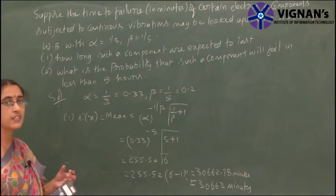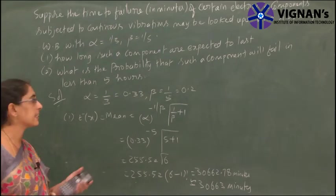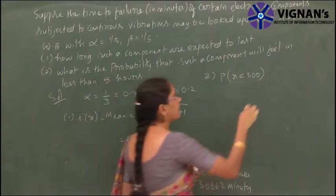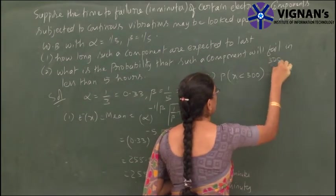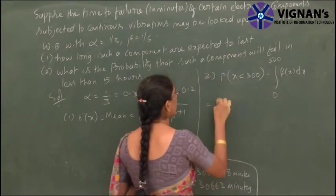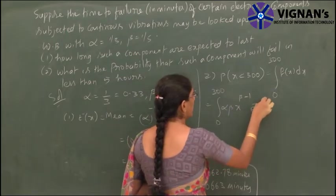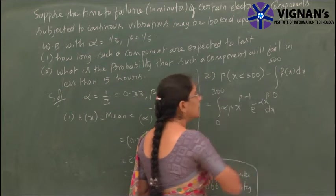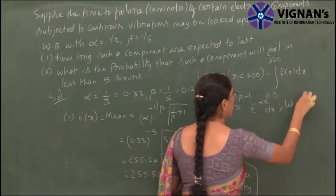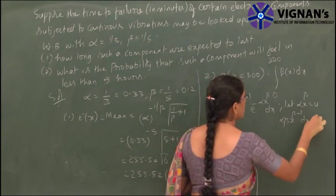Less than 5 hours equals 300 minutes, since the data is in minutes. So we have to find P(X < 300), which means the integral from 0 to 300 of f(x) dx. That equals the integral from 0 to 300 of alpha·beta·x^(beta-1)·e^(-alpha·x^beta) dx. Let alpha·x^beta equal u, then alpha·beta·x^(beta-1) dx equals du.